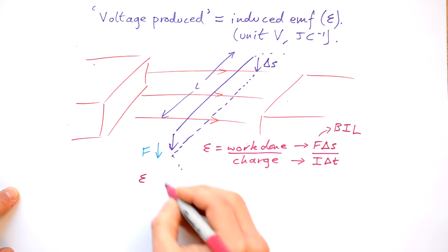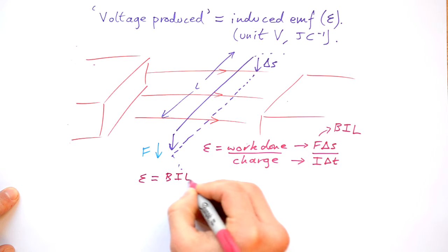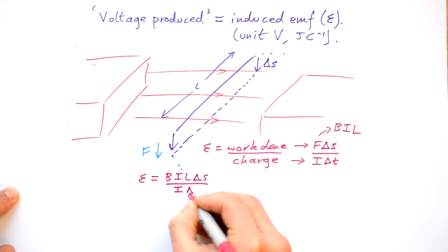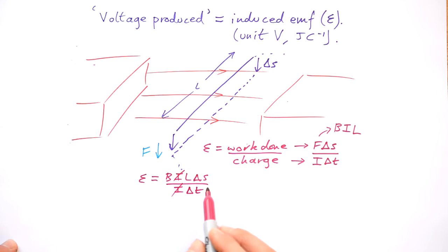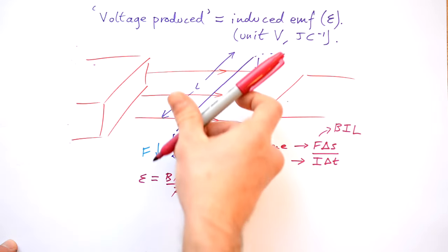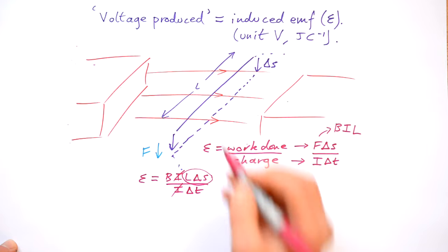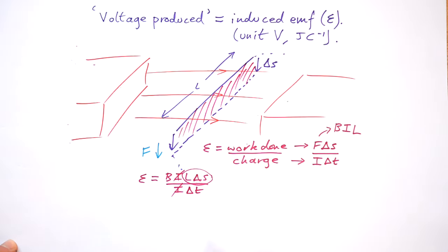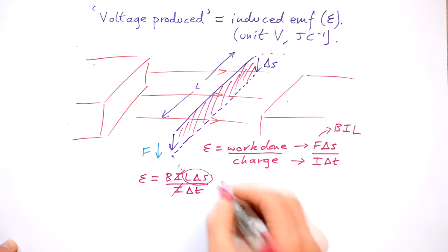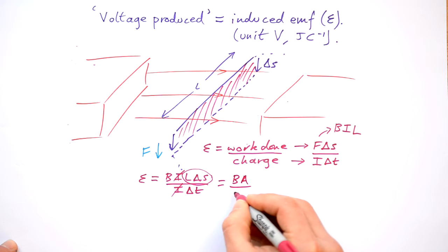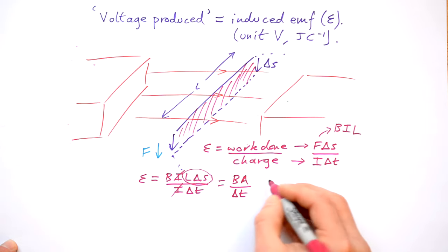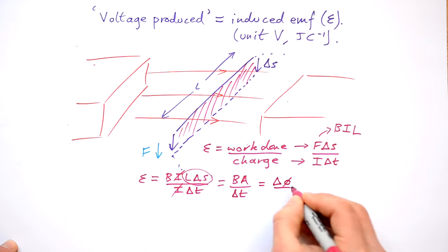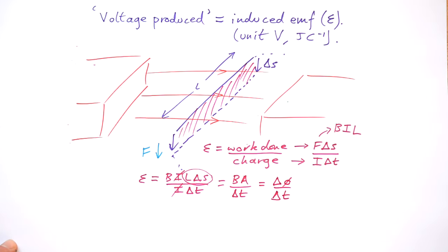So what do we end up with? The EMF induced in this wire is going to be B I L delta S divided by I delta T. That's flux density times current times length times distance moved, divided by current times time — how long it takes. The I's disappear. Now what have we got here? We have L times delta S — that's the length of the wire times the distance moved. We can think about that as the area of flux that we're sweeping our wire through. So this ends up being B times A divided by delta T.